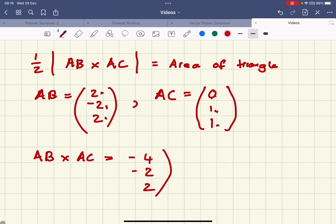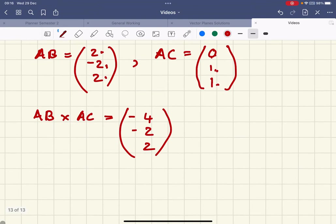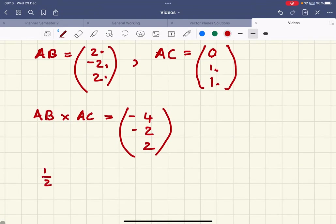So here's my vector AB cross AC. Now I want to do half of the modulus of AB cross AC.